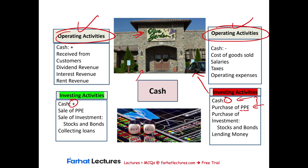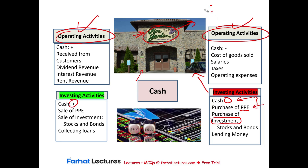If you have extra money, you can also purchase investments in other companies' stocks and bonds. For example, Olive Garden might buy Apple stock, Google (Alphabet), or Nvidia stock. They can buy their stocks or their bonds — this activity goes under investing activities. Or they might be lending money to other companies, which is also an investing activity. Those are all outflows of cash under investing.